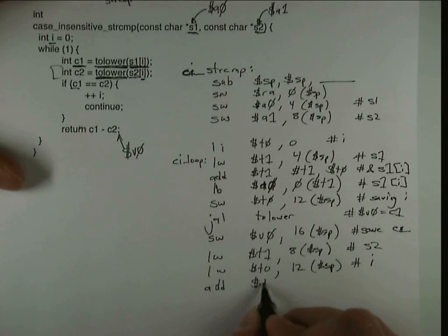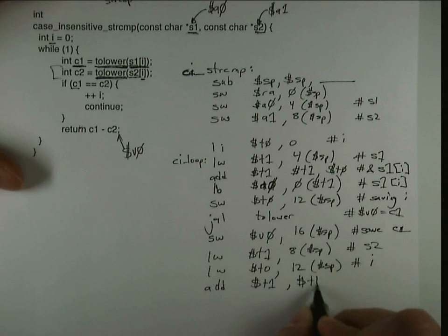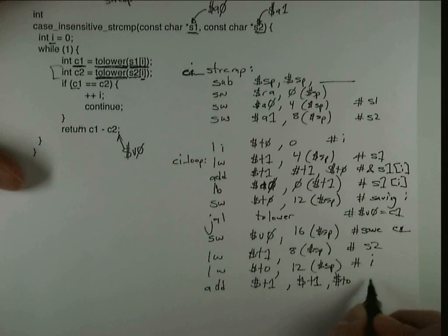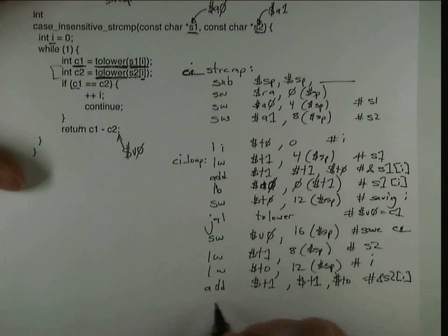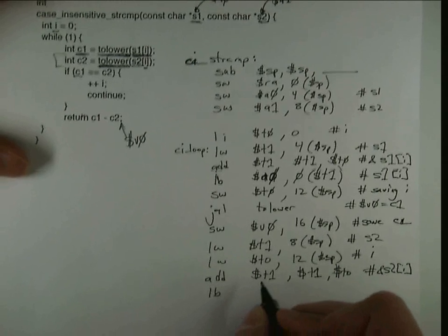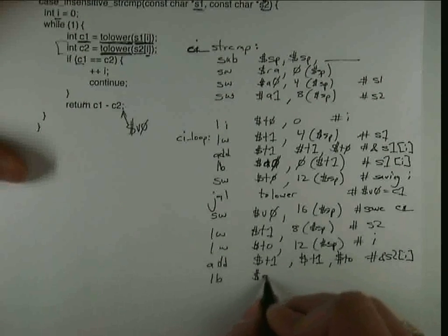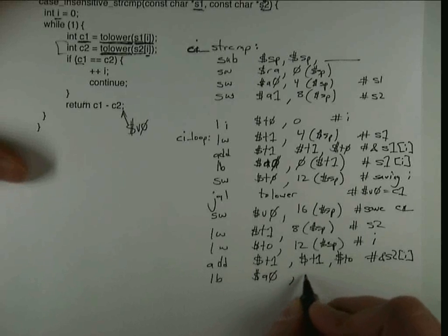And I can then add these two together, T1 and T0 together to get the address of S2[I].